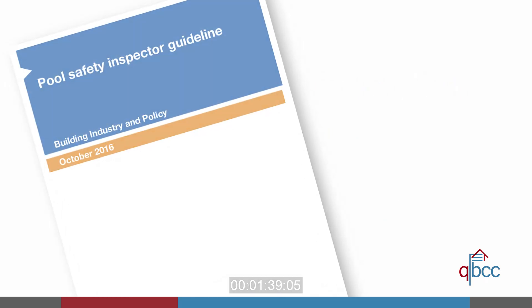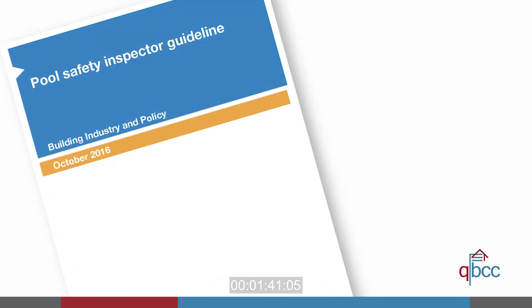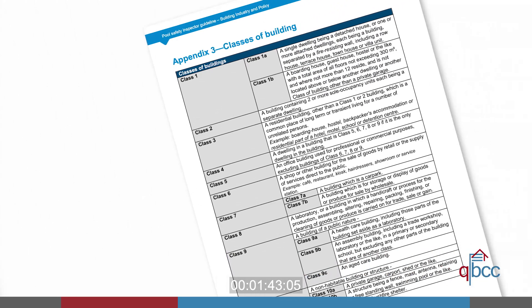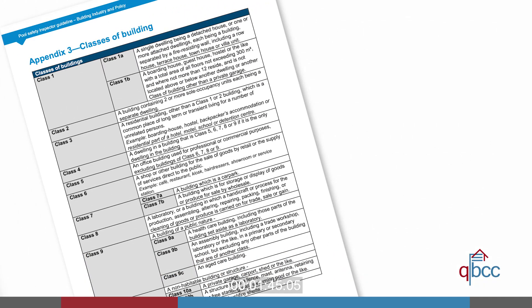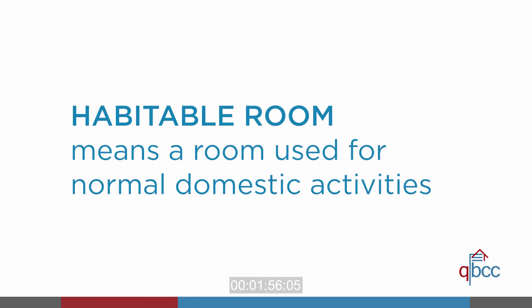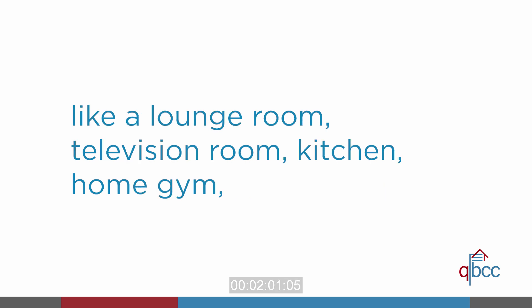The pool safety inspector guideline provides information about the classes of buildings as they are determined under the Building Code of Australia. The code sets out the minimum technical and design requirements and groups buildings by the purpose for which they are designed, constructed or adapted for use. It then goes on to list habitable room types and explains the minimum design requirements for damp and weatherproofing and natural ventilation.